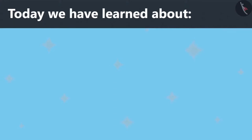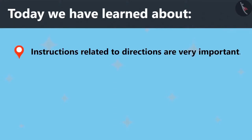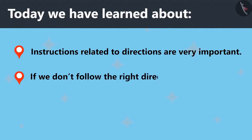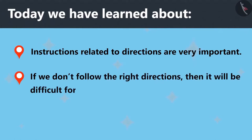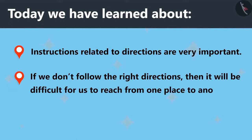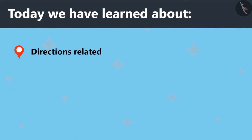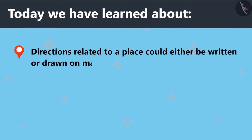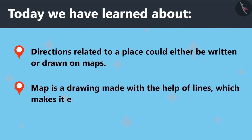Today we have learned that instructions related to directions are very important. If we don't follow the right directions, then it will be difficult for us to reach from one place to another. Directions related to a place could either be written or drawn on maps. A map is a drawing made with the help of lines which makes it easy to reach different places.